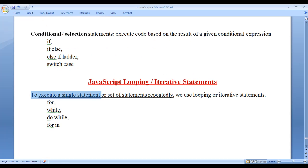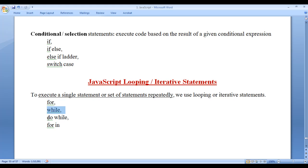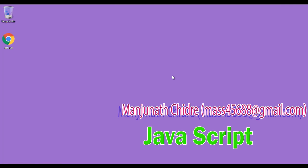Remember that to execute a single statement or set of statements repeatedly, we use looping or iterative statements. For, while, do-while, and for-in are considered as JavaScript looping or iterative statements. I think for this video tutorial this much is enough. In the next video tutorial we are going to understand the for loop, then while loop, do-while, and for-in. We will understand some examples and when to use them in detail, step by step. I suggest you watch this video again and again to understand everything clearly. For more benefits, please subscribe to my YouTube channel and don't forget to like, comment, and share these videos. Keep learning, keep coding, keep sharing. Thank you very much. See you in the next tutorial.